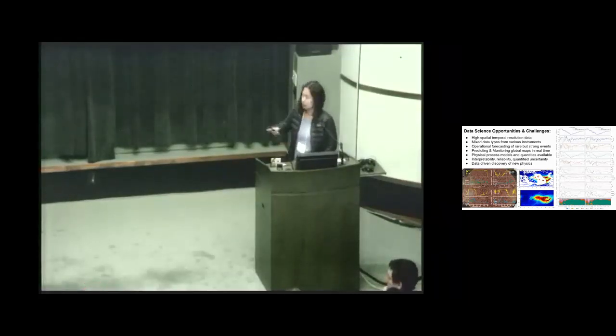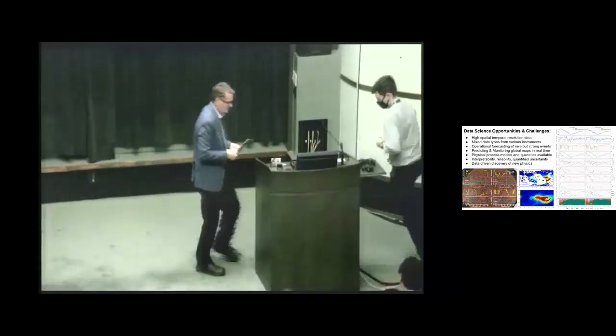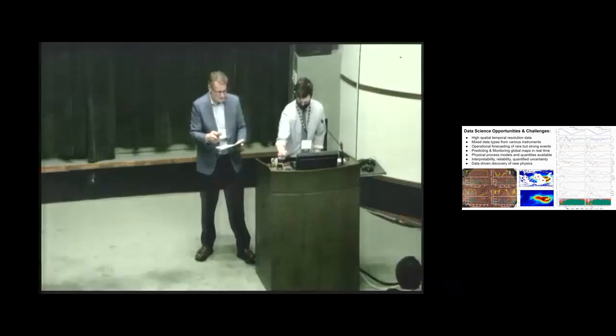Some parameters can be processed in real time, and some are delayed. We do have some knowledge of fundamental understandings of the physical process that drives the model behind it. We aim at having interpretable and reliable models with quantified uncertainty for decision-making process. We want to give data-driven discovery of new physics. I'm showing three different figures I have in three different papers in this field. On the bottom left figure is one of our work on real-time forecasting of solar flare events. In the middle, we're trying to fill in a global geomagnetic index map. On the right, we're trying to do real-time forecasting of another geomagnetic index event with interpretable machine learning. Thank you.